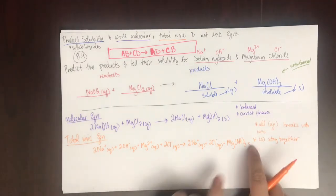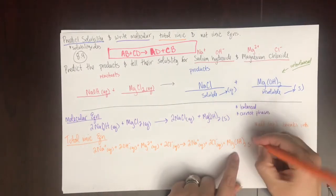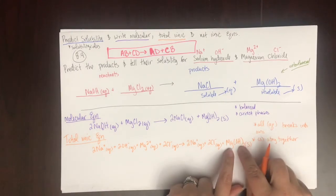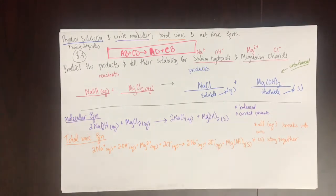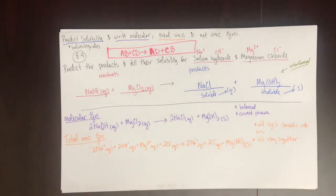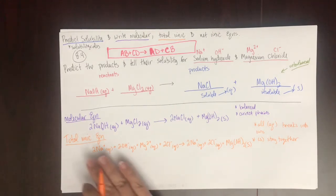Magnesium hydroxide stayed together because it's a solid. Everything else broke apart into its individual ions. That's the total ionic equation — everything written out as its component ions.